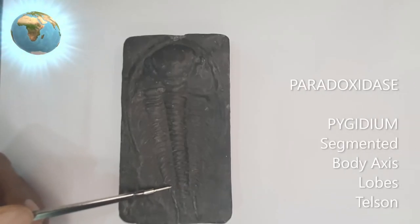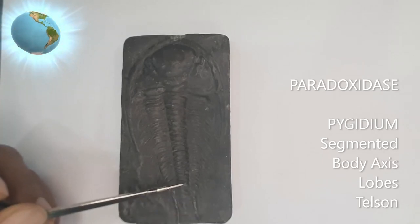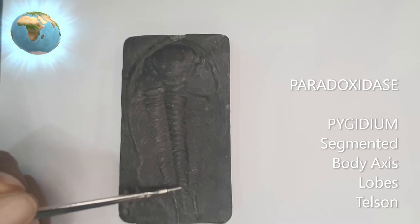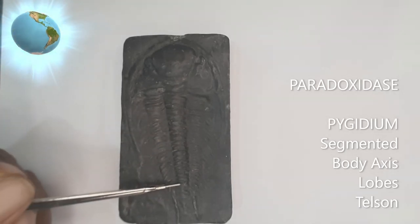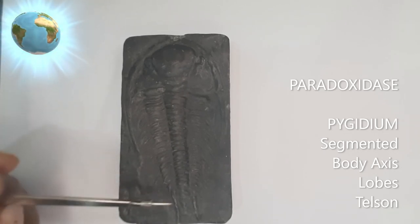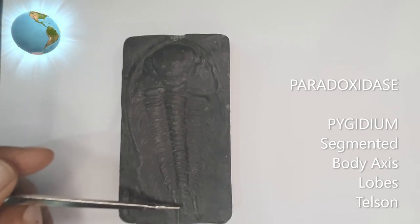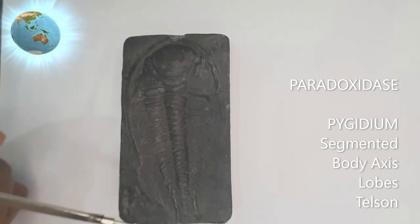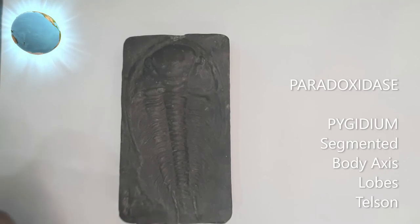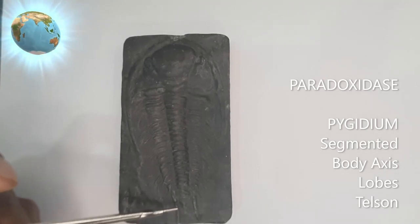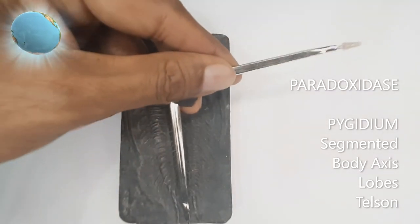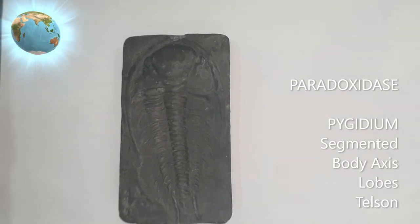Below the thorax line is the Pygidium, which also has segmented parts — a central part and lateral parts. Sometimes the Pygidium's posterior end will be more prolonged like a tail, but we cannot call it a tail — it is called Telson. So the posterior-most prolonged part of the Pygidium is called Telson.